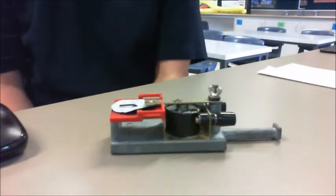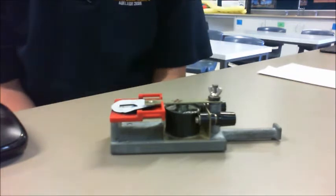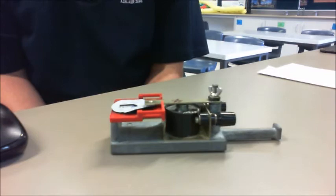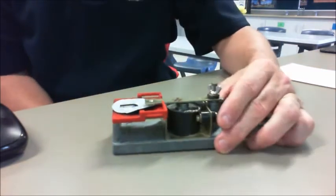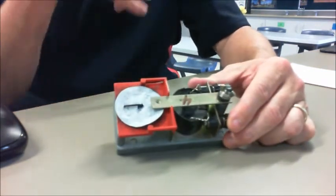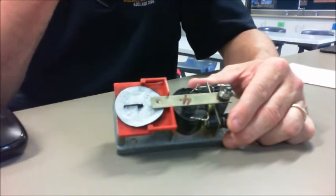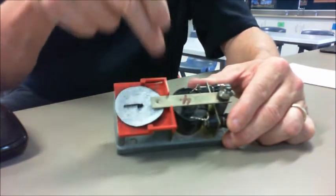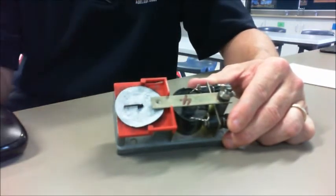Welcome ladies and gentlemen to today's practical which is looking at speed. To calculate speed, we use a ticker timer. This is a ticker timer here - it's basically a device that measures how fast a piece of tape that is pulled through is traveling.